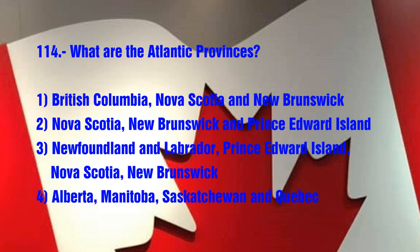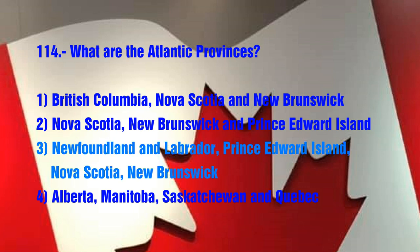Question No. 114. What are the Atlantic Provinces? 1. British Columbia, Nova Scotia, and New Brunswick, 2. Nova Scotia, New Brunswick, and Prince Edward Island, 3. Newfoundland and Labrador, Prince Edward Island, Nova Scotia, New Brunswick, 4. Alberta, Manitoba, Saskatchewan, and Quebec. The answer is 3. Newfoundland and Labrador, Prince Edward Island, Nova Scotia, and New Brunswick.